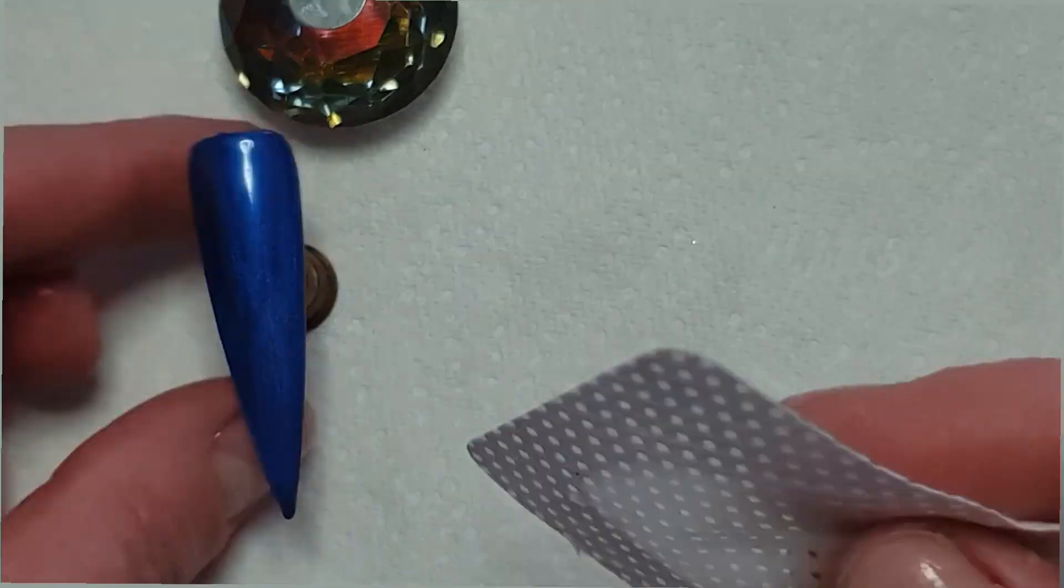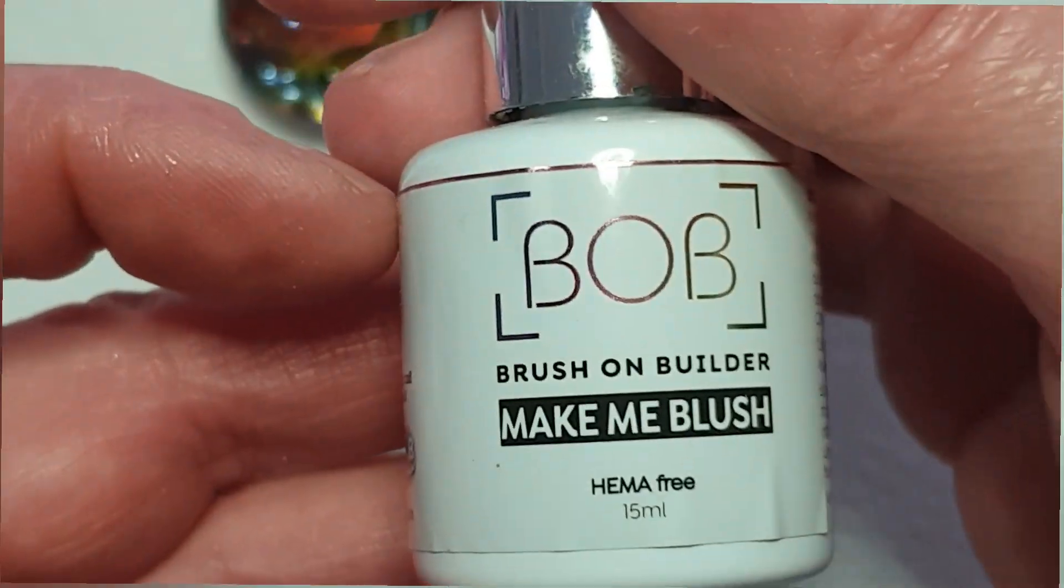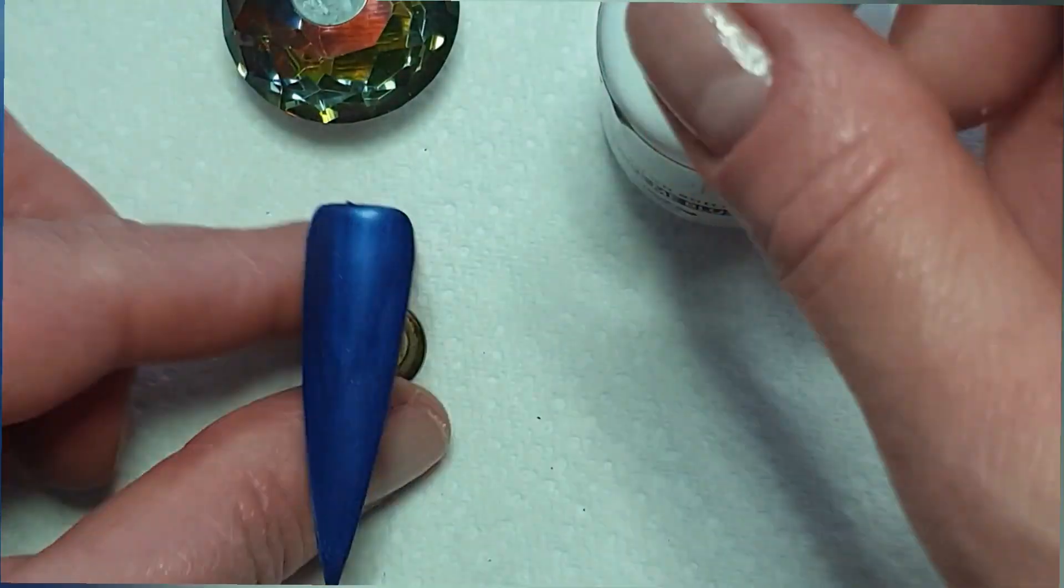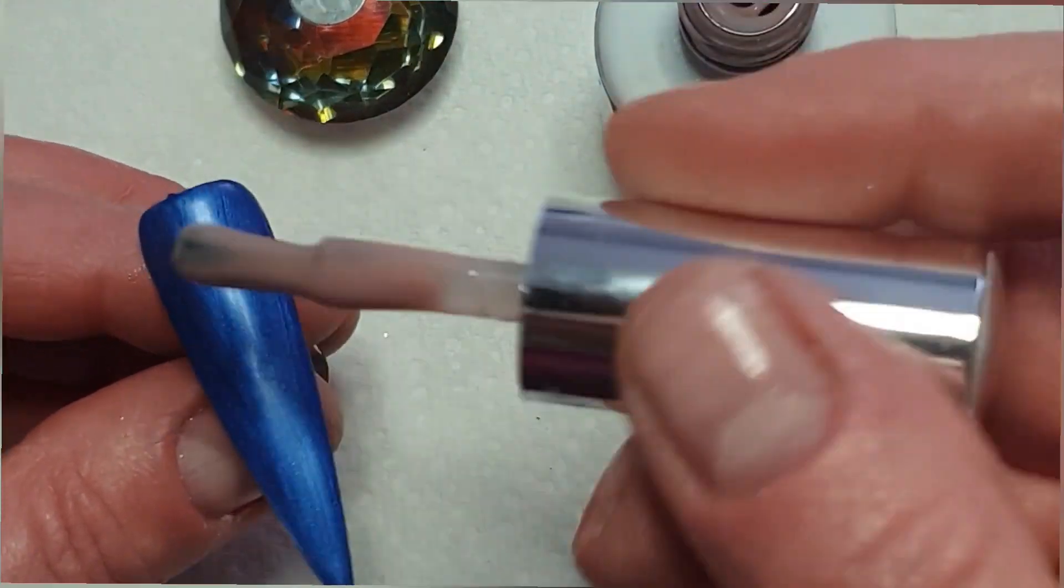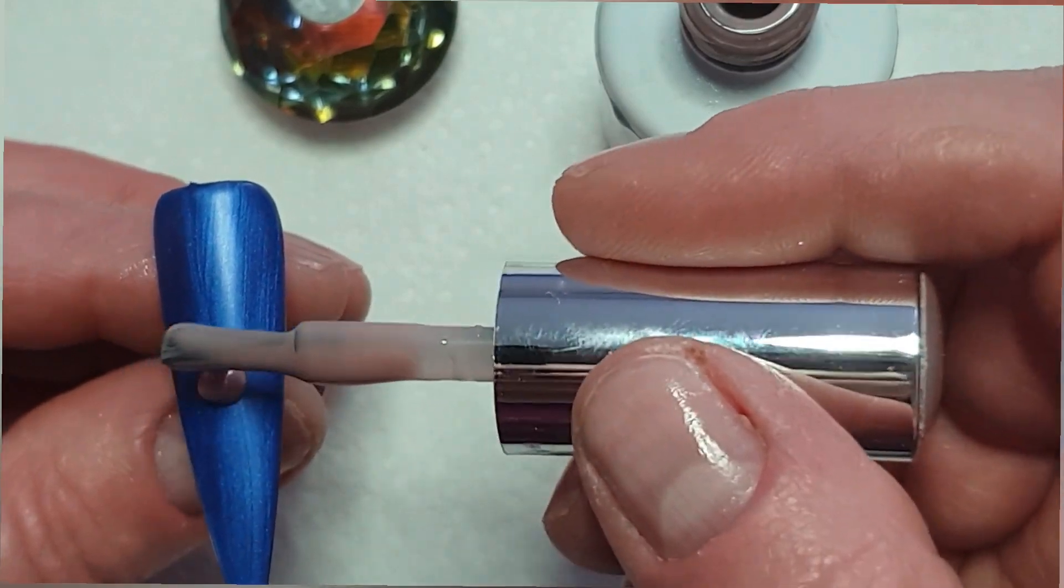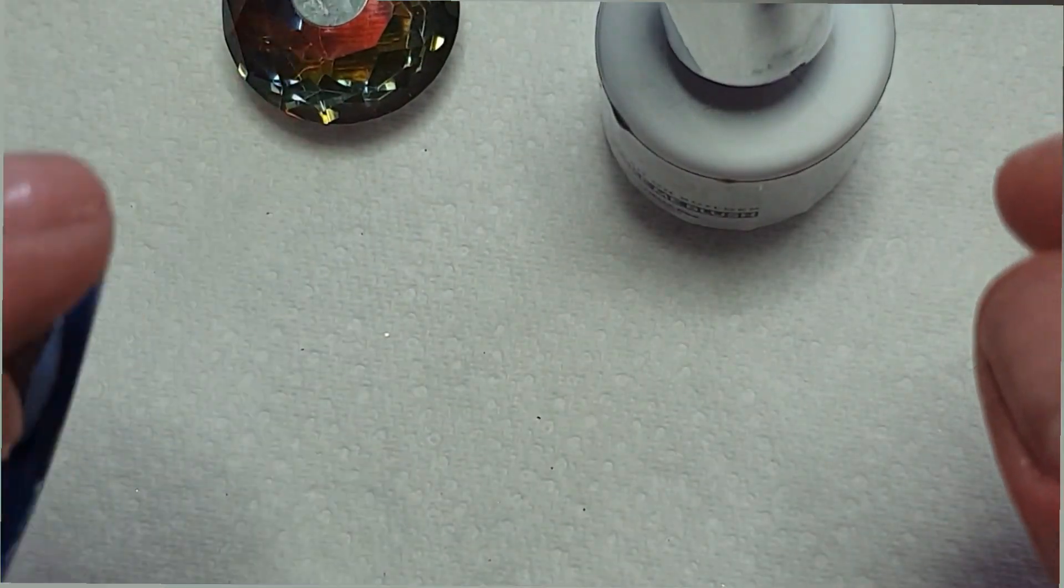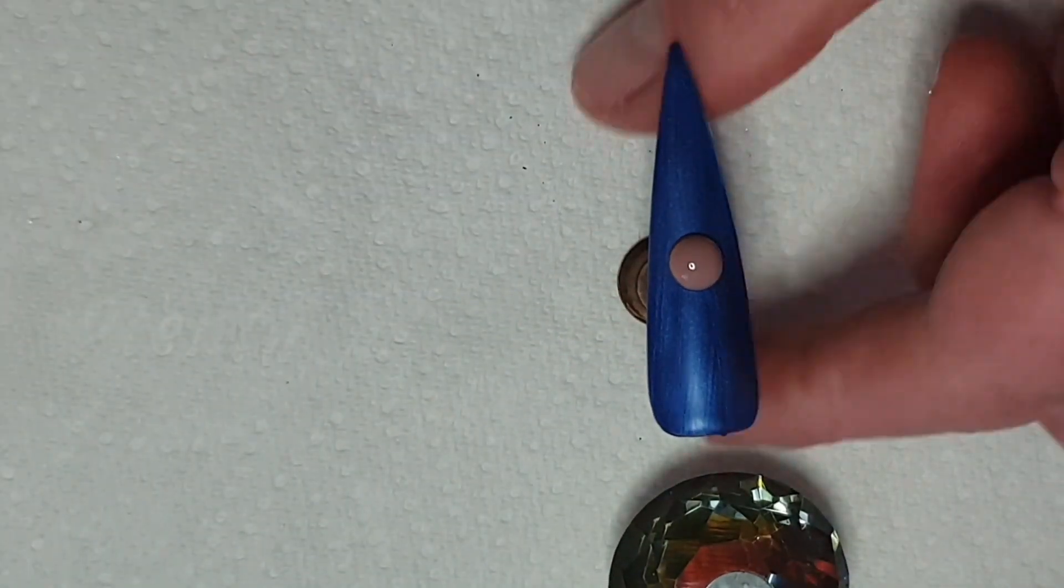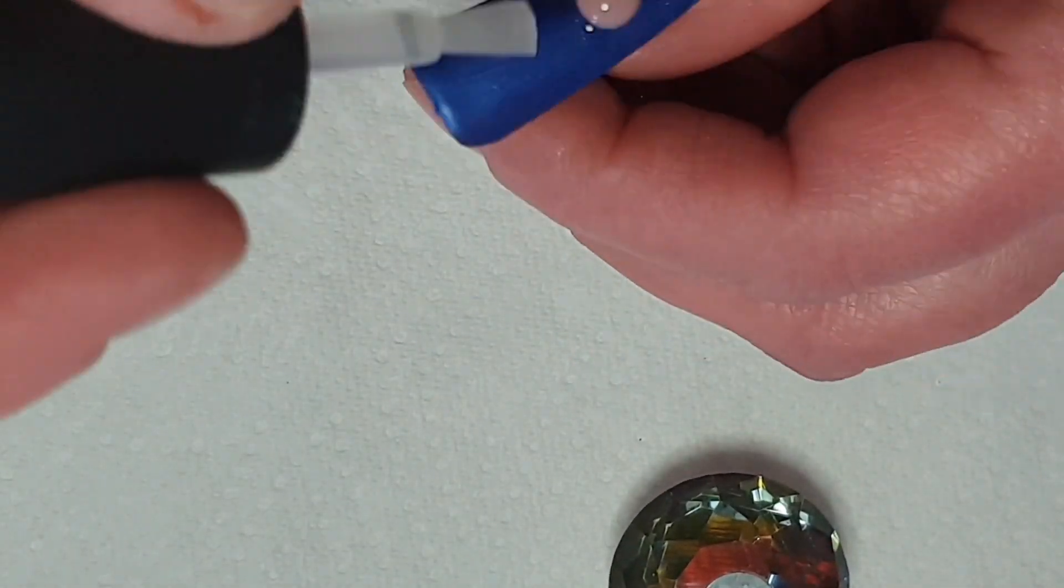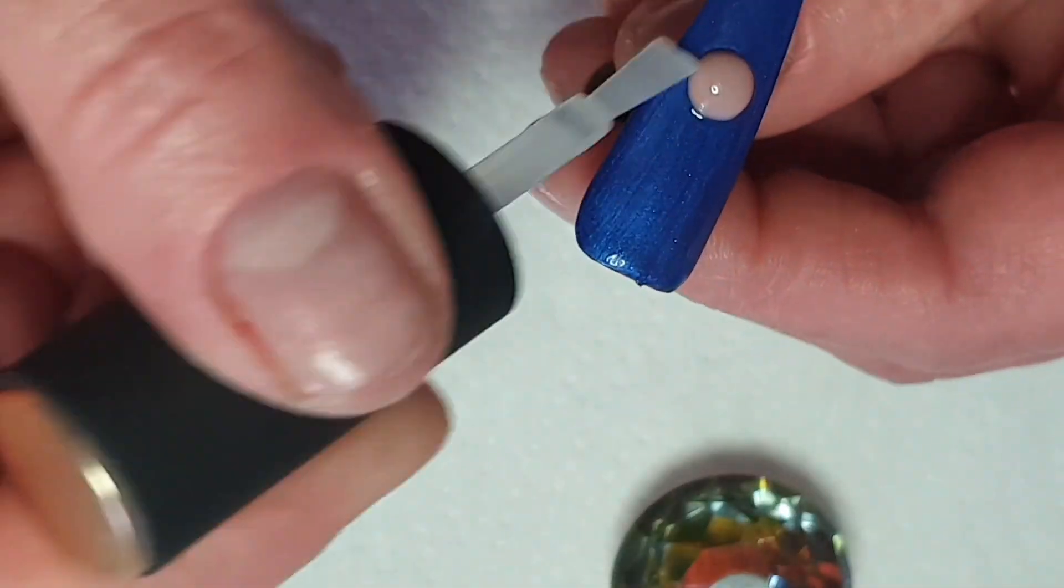So I've done two coats of the blue. I'll put all the colors in the description box below because I can't remember offhand. I'm going in with Bob, which is sort of like a skin tone, a nude for his nose. Pop that in the lamp. And now I'm going over the whole nail with matte top coat.